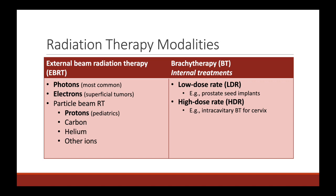Another modality is brachytherapy, which refers to using some type of radioactive source — a radioactive seed — that is inserted into the patient's body and held very close to the tissue we want to treat. Depending on the activity level of that radioactive source, the radiation can be given at a low dose rate, or if the source has higher activity, at a high dose rate. We'll go through some examples and pictures to illustrate what we mean by that.